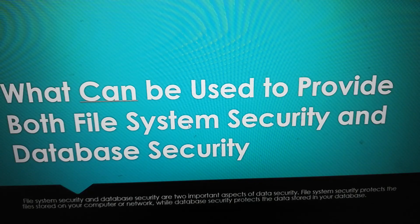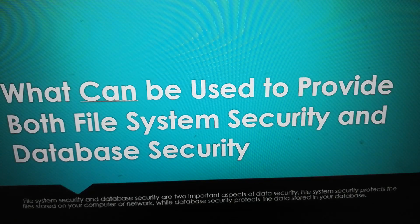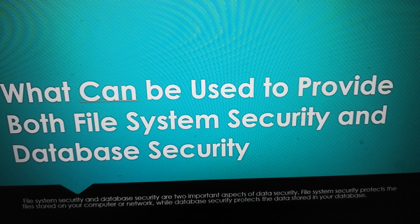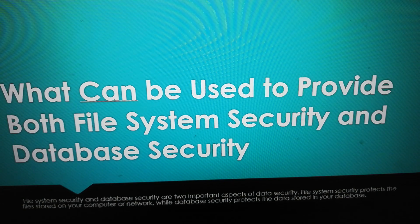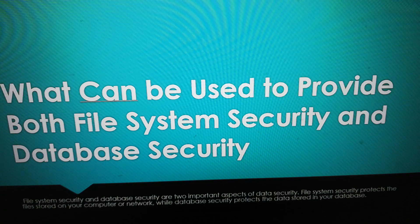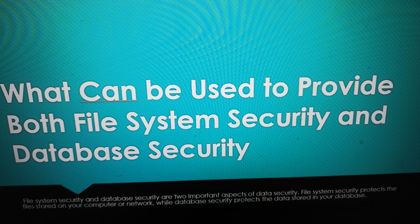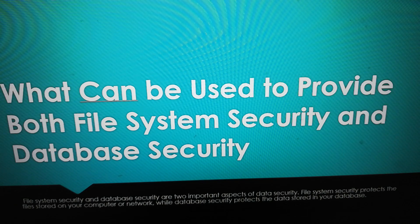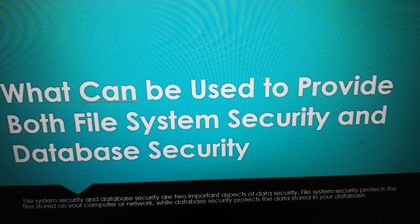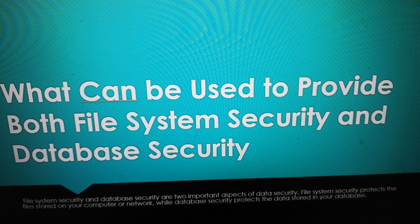Hi everyone, welcome to my YouTube channel. Today I'm going to be talking about what can be used to provide both file system security and database security. File system security and database security are two important aspects of data security. File system security protects the files stored on your computer or network, while database security protects the data stored in your database.